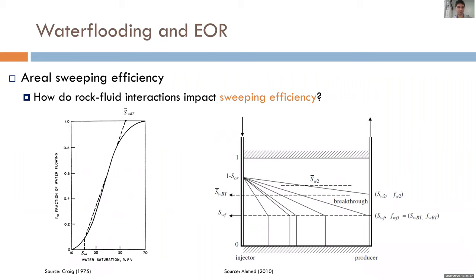Without going through the whole water flooding lecture, I want to show in a very summarized way how rock-fluid interaction affects sweeping efficiency. On the left we see the fractional flow versus saturation plot, which we use as a simplified frontal advancement model to calculate the average water saturation at breakthrough and do simplified simulation calculations of displacement.